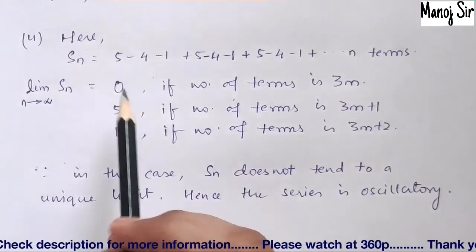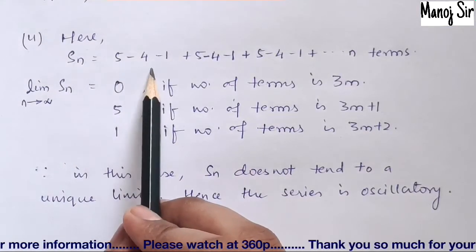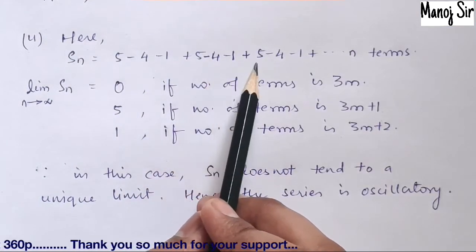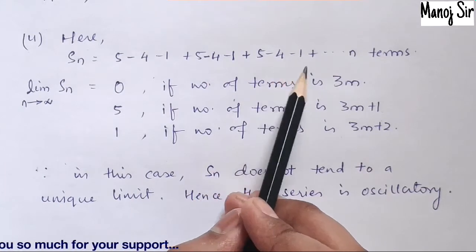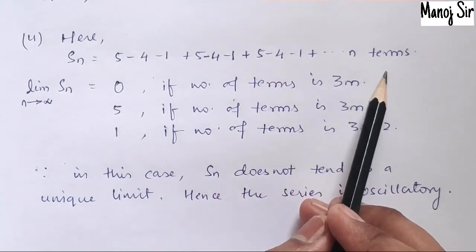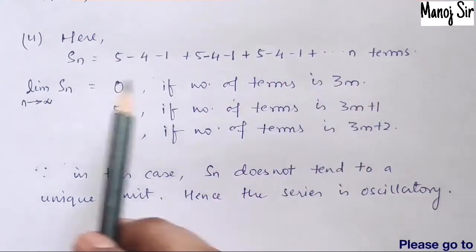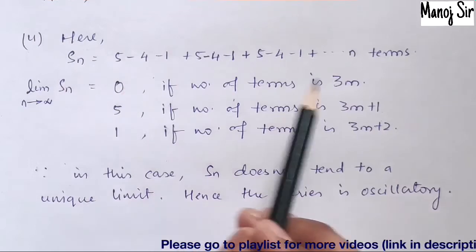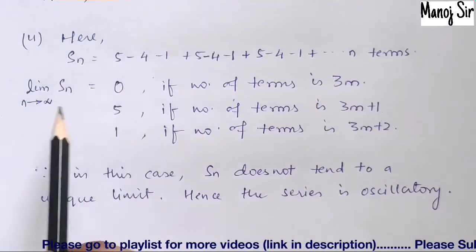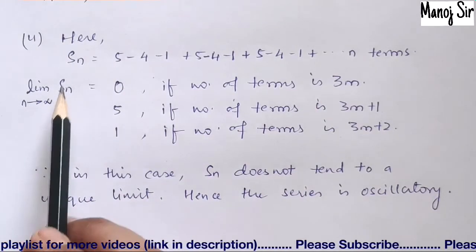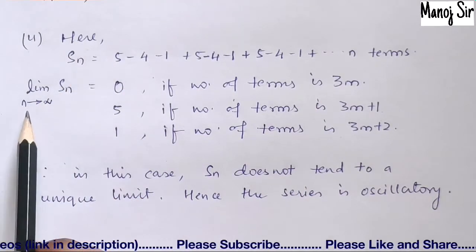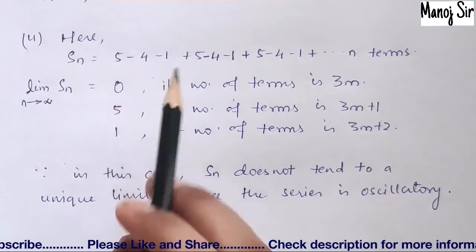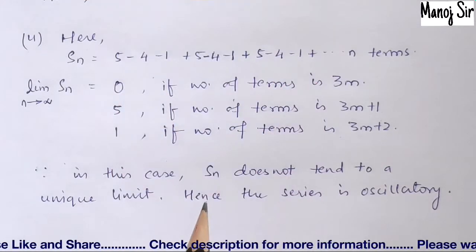The second series is 5 − 4 − 1 + 5 − 4 − 1 + … up to n terms. We need to find the sum Sn. When we take the limit of Sn as n tends to infinity, we are going to get three cases.